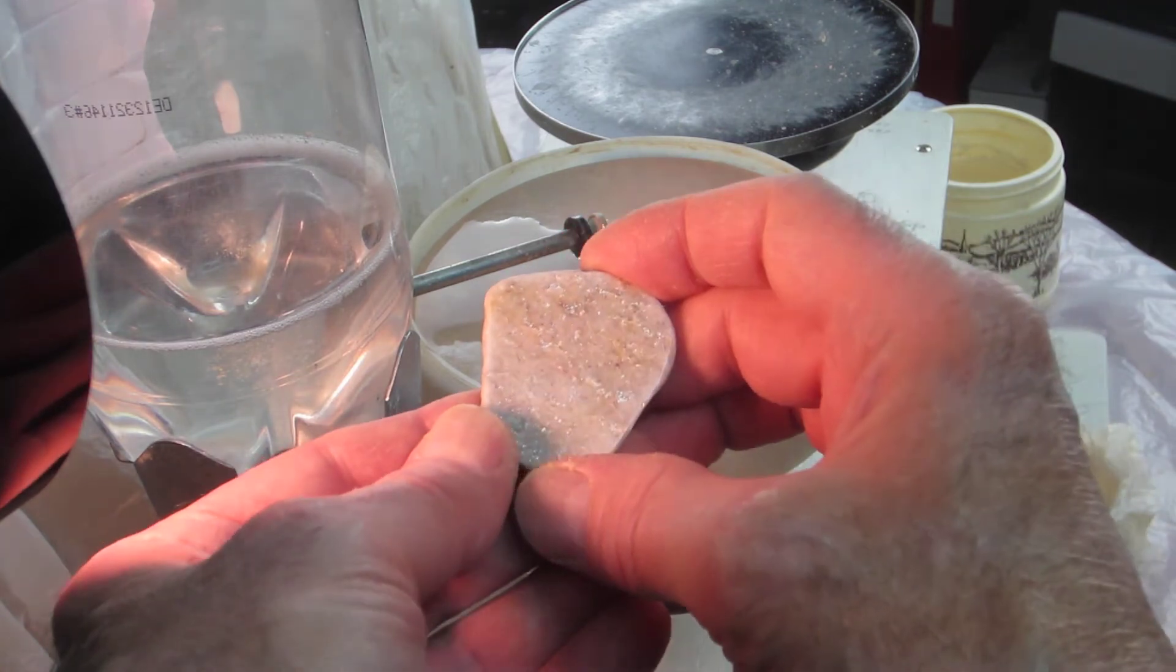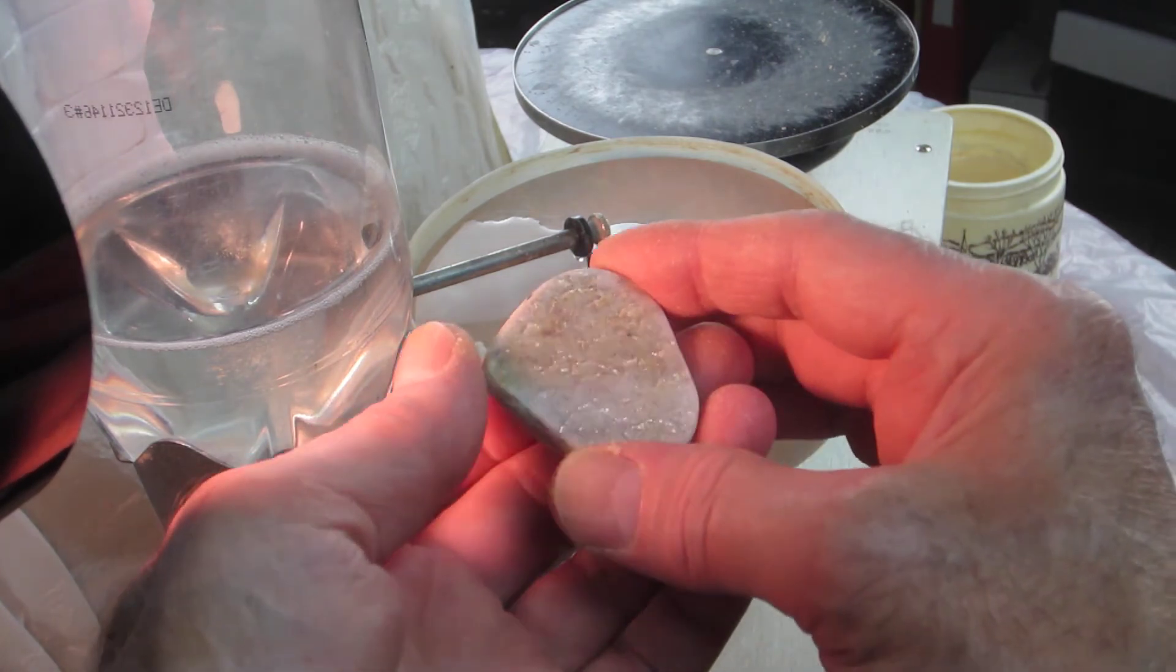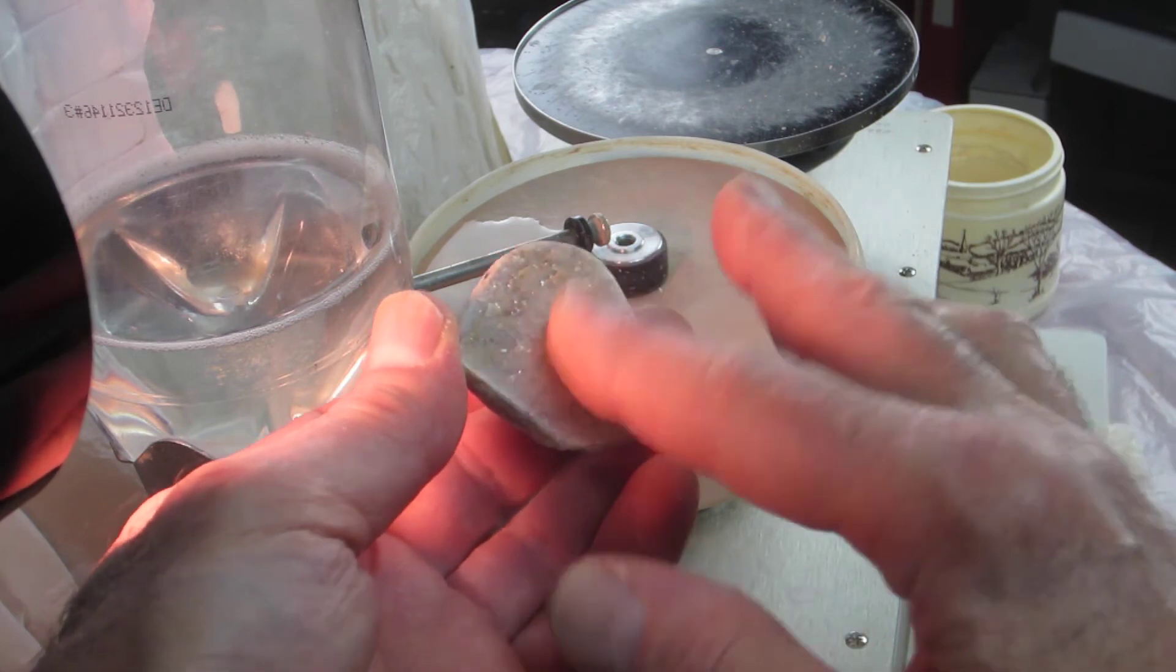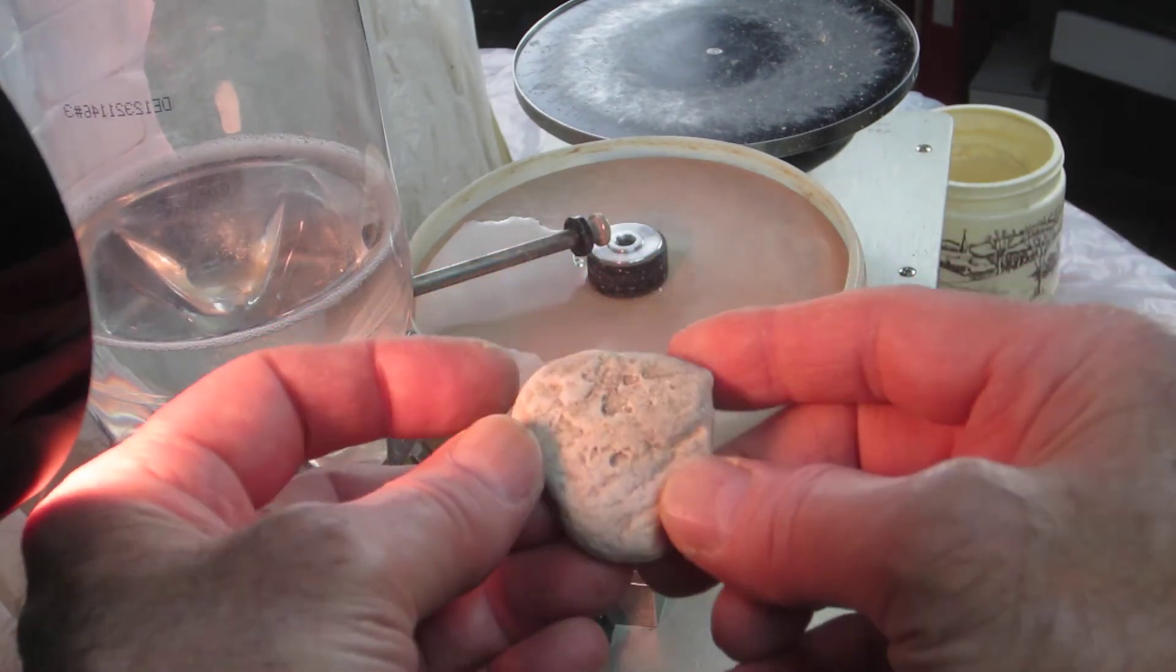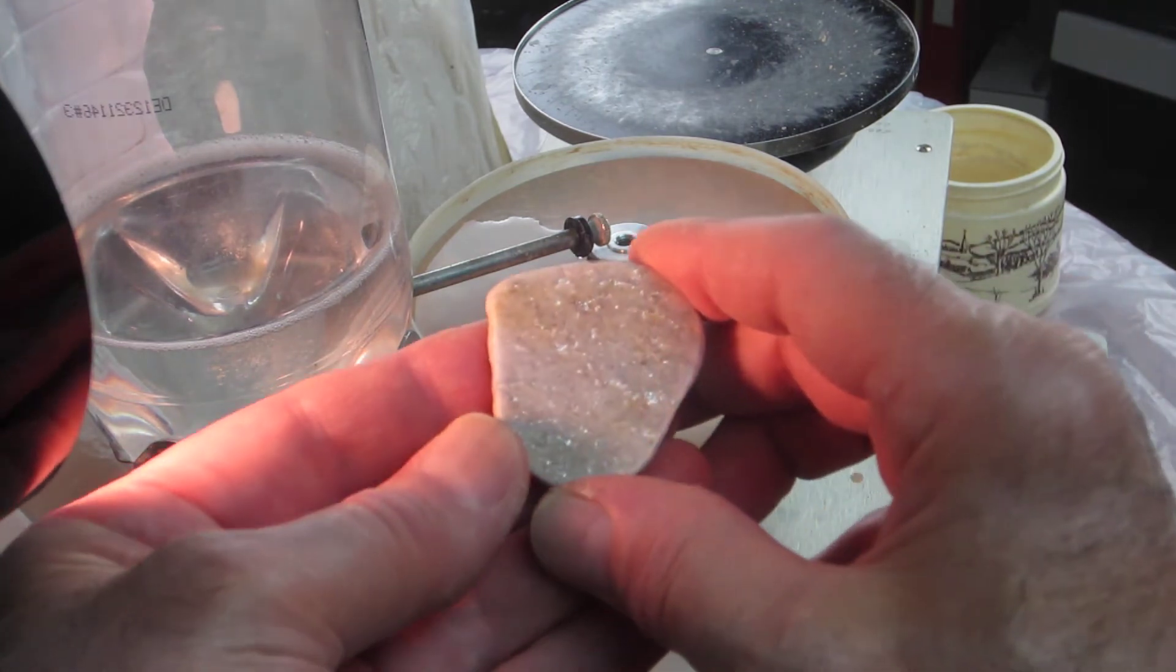And this stone, it's not going to show up very well because there's such minute little specks. But all through this rock is little black specks, which I tend to think is probably Muscovite.